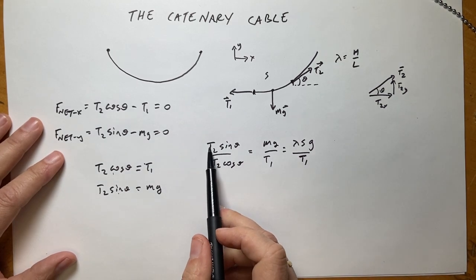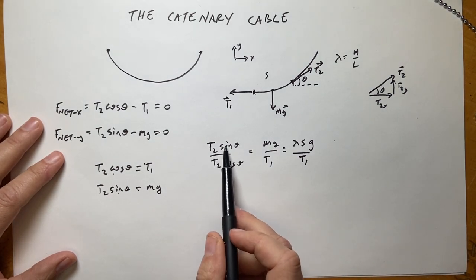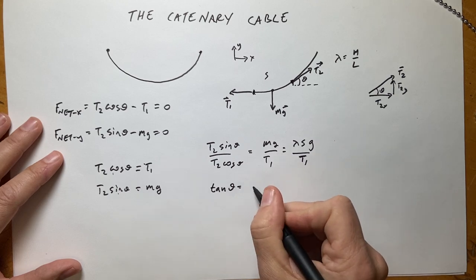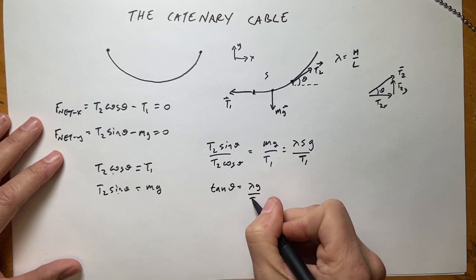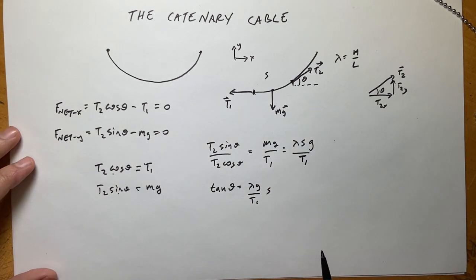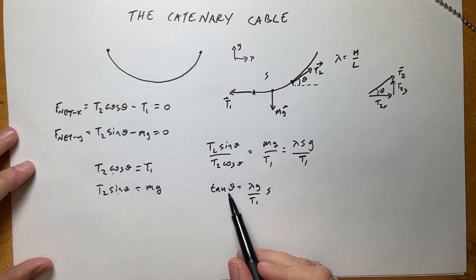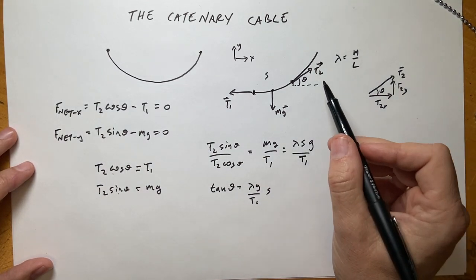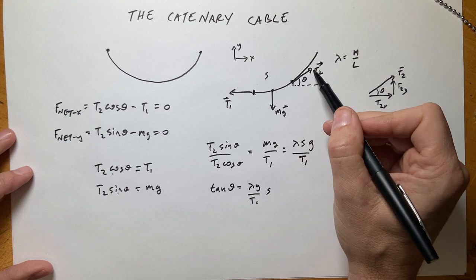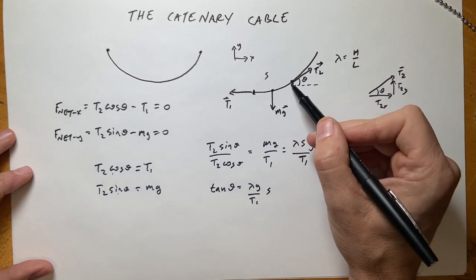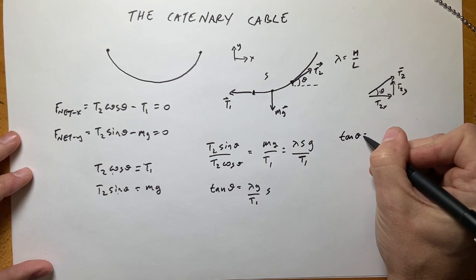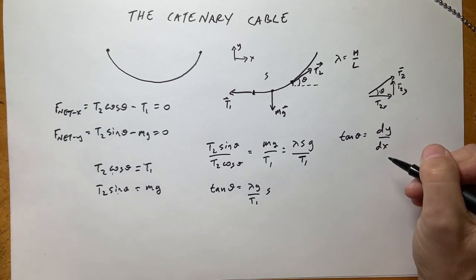Notice that the T2's cancel on the left side, and I have sine over cosine. So this means I get tangent theta is going to be equal to lambda·g over T1, times s. Now there is a relationship with theta, because if I look at this tension T2, it is tangent to the curve.